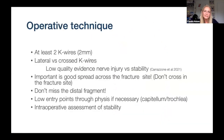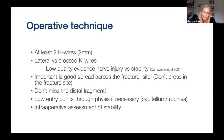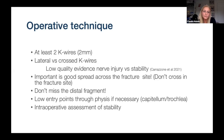For operative technique in a standard supracondylar fracture: the BSCOS guidelines recommend at least two K-wires. You can use three or four if stability demands it. K-wires should be approximately 2 mm in diameter for best stability, though in very young children — a one-and-a-half or two-year-old — 2 mm wires look very large and you may opt for 1.6 mm instead.